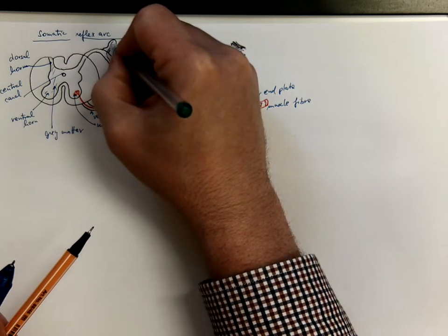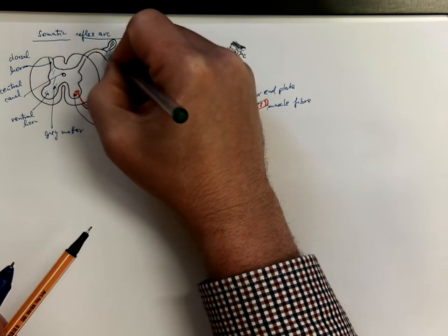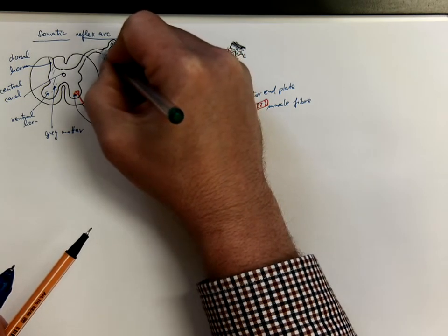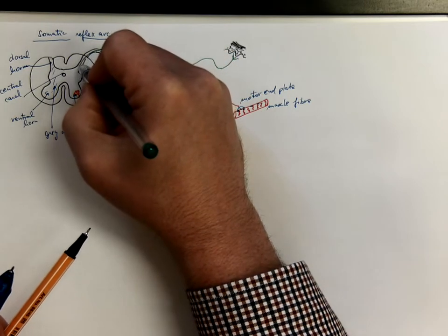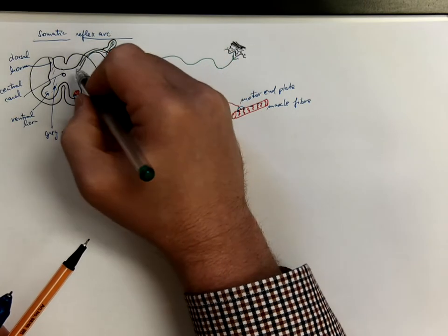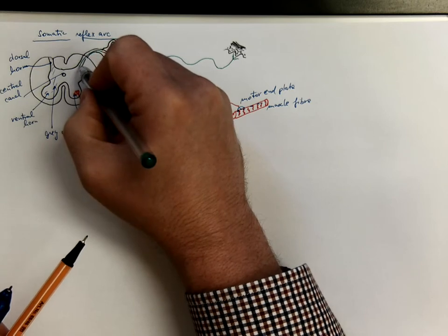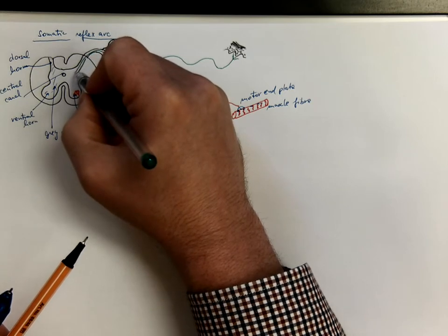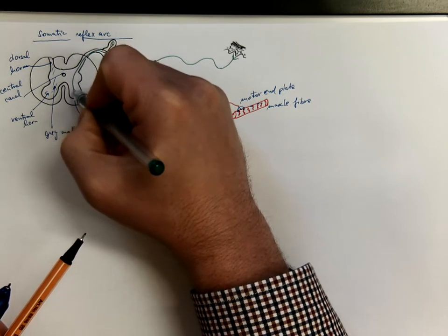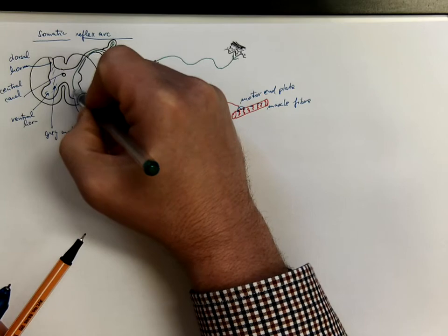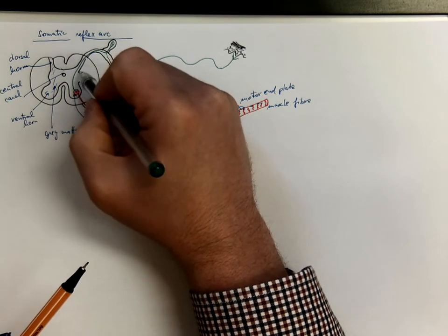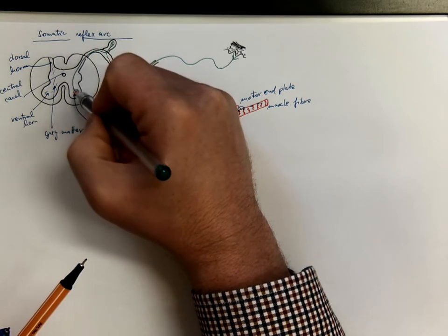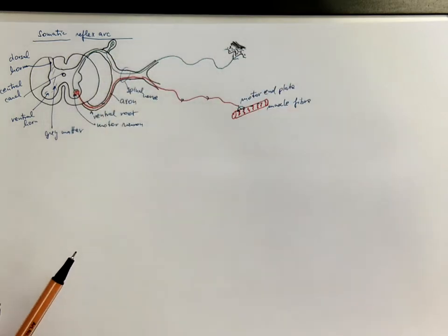It's a pseudo-unipolar neuron with a dendro-axon, and the axon goes through the dorsal root into the dorsal horns of the spinal cord grey matter. And in the most simple example — the so-called monosynaptic reflex arc — it synapses on the motor neuron.